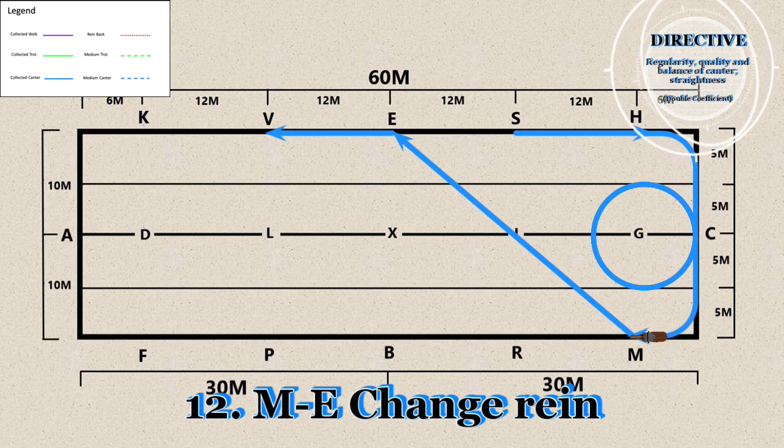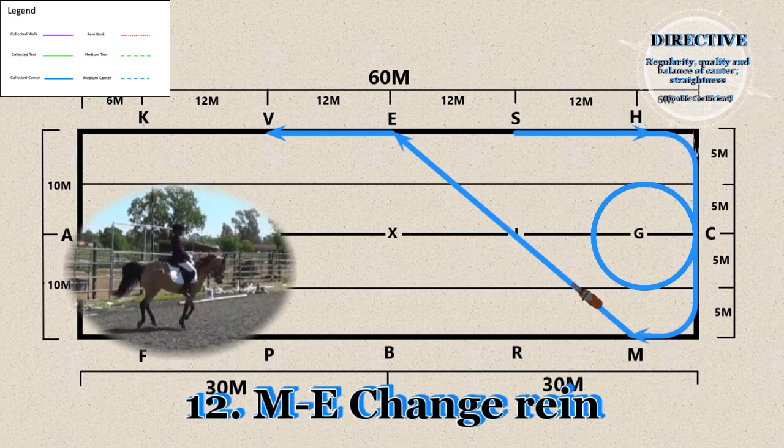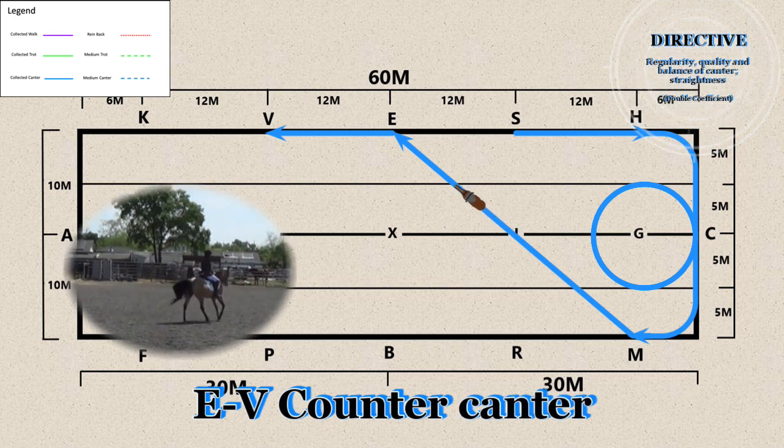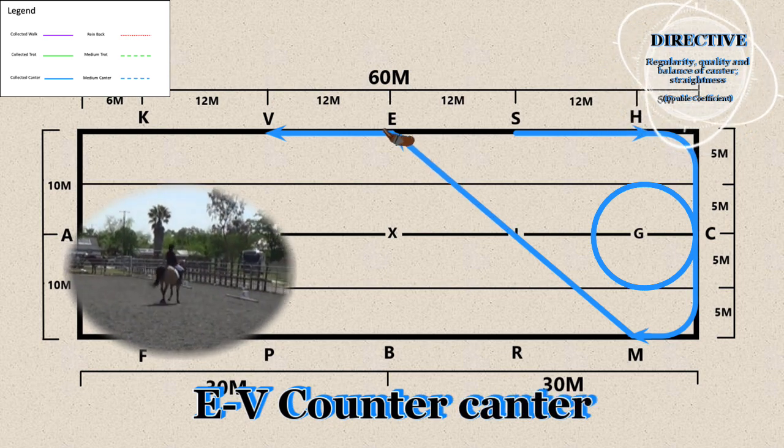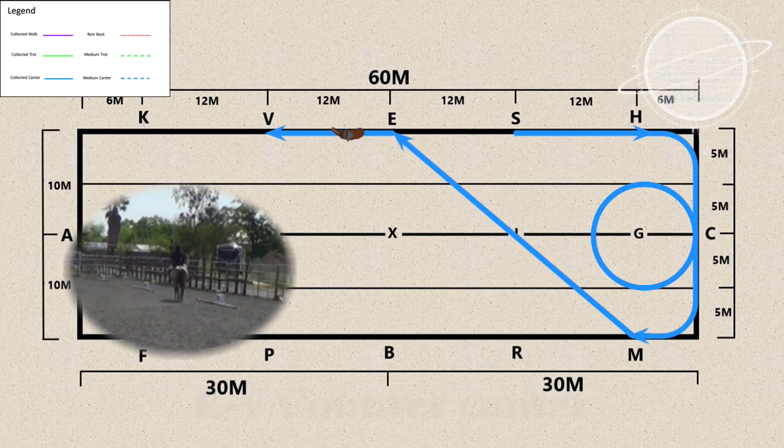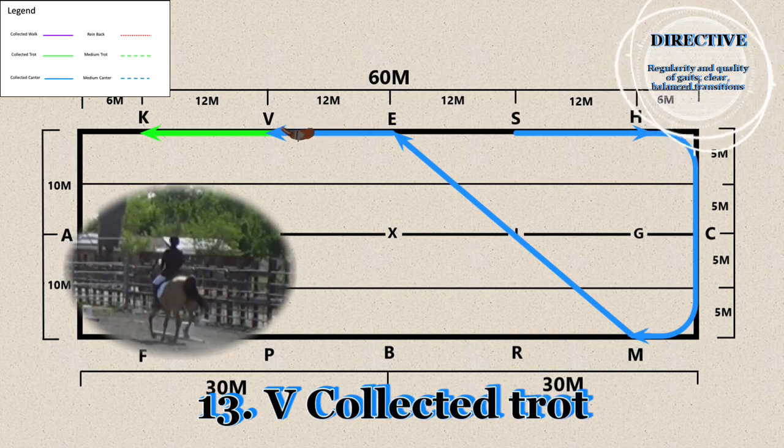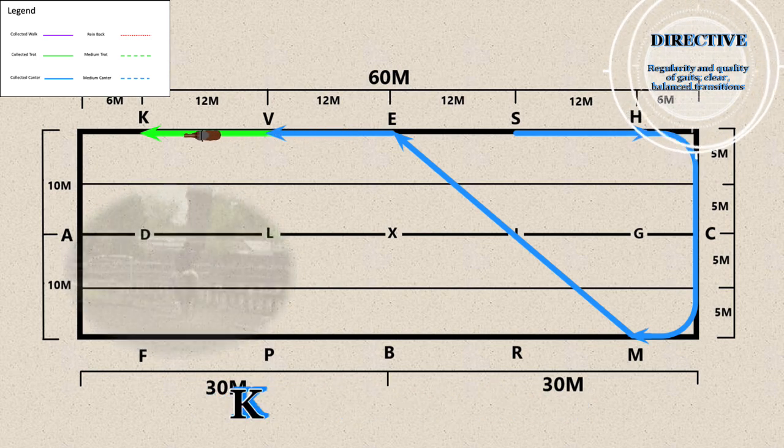12. M through E - Change rein. E through V - Counter canter. 13. V - Collected trot.